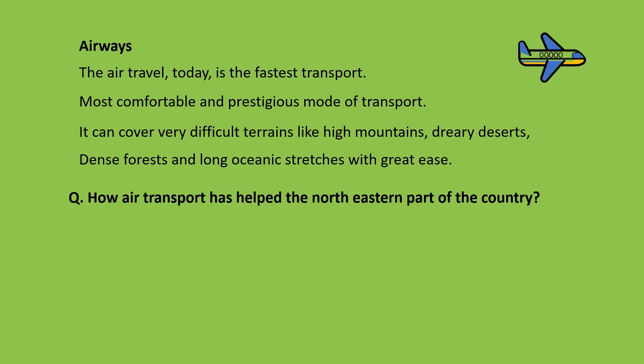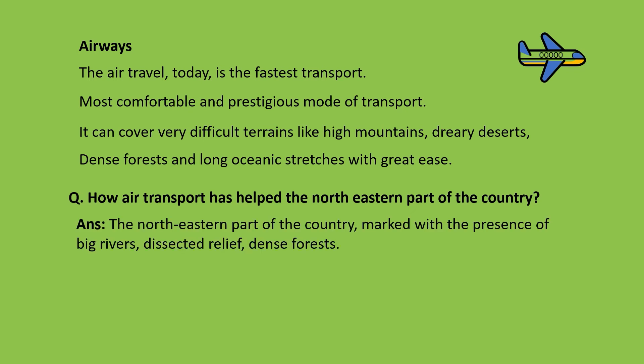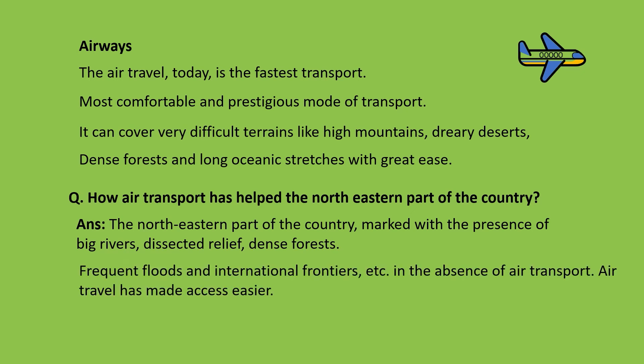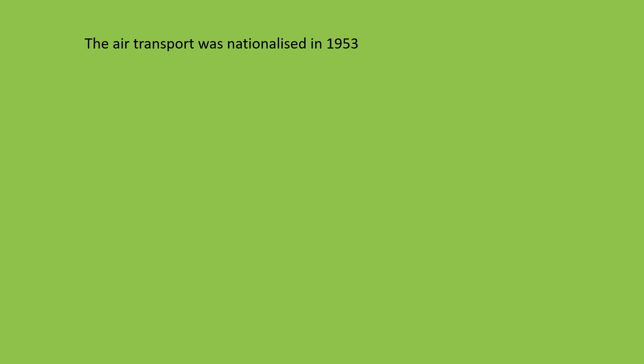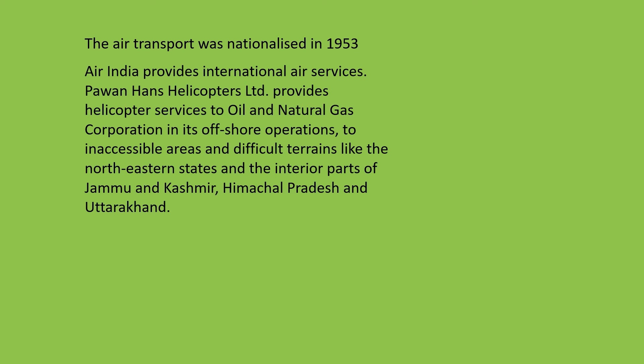How has air transport helped the northeast part of the country? The northeast is marked with the presence of big rivers, high mountain ranges, dense forests, frequent floods, and international frontiers. In the absence of air transport, travel in that area would be very difficult. Air travel has made access to that region quite affordable. Air transport was nationalized in 1953. Air India, the national air carrier, provides international air services.